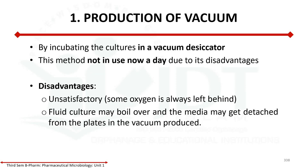The first method is production of vacuum. In this situation, we have a microorganism in a culture using a desiccated method. Vacuum is used to remove oxygen, but this method is not used nowadays because it is unsatisfactory — there will always be some oxygen left behind. Also, fluid culture may boil over and the media may get detached from the plate in the vacuum producer. This is why it is unsuccessful.